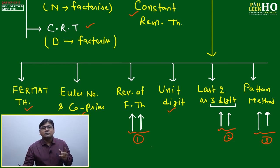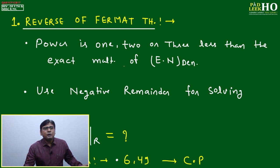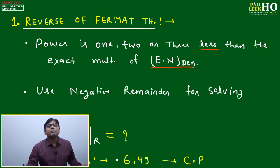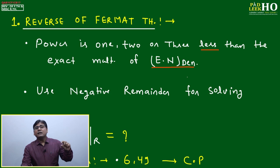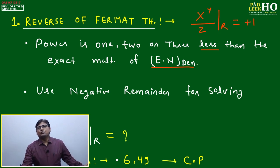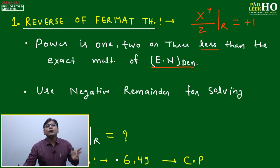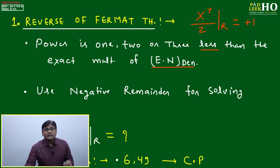The Reverse of Fermat's Theorem applies when the power is falling short by one, two, or three from the exact multiple of the Euler number of the denominator. In Fermat's theorem, x^y ÷ z gives remainder +1 when x and z are co-prime and y is exactly a multiple of the Euler number of z. When y falls short by one, two, or three, we apply the Reverse of Fermat's Theorem.